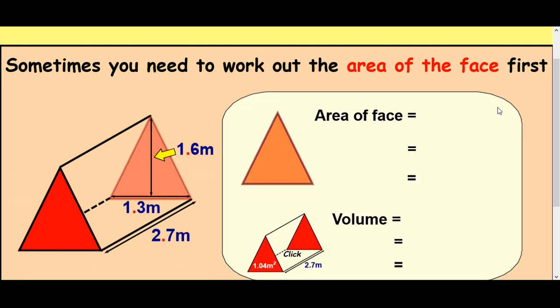So the first thing we have to think about is how do you work out the area of a triangle. The area of a triangle is just a half base times height from previous learning. The base of the triangle and the height of the triangle must be at right angles to each other. So it's a half 1.3 times 1.6. Just type that into your calculator and you'll get an answer of 1.04 meters squared.